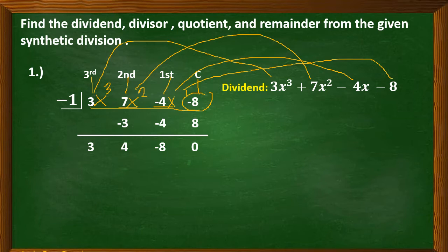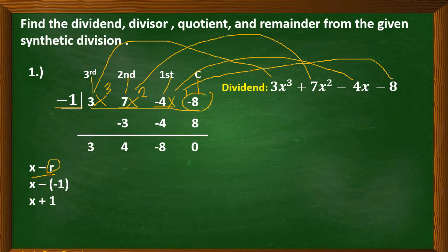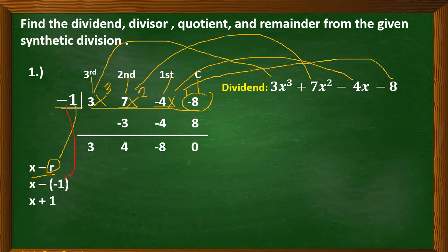Now for our divisor — we are going to follow the format of x minus r, where r refers to the value in our divisor part. We substitute: copy x, copy the minus sign, and r is substituted by negative 1. Simplifying: negative times negative 1 equals positive 1, so our divisor is x plus 1.